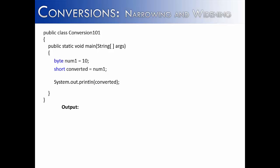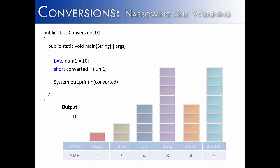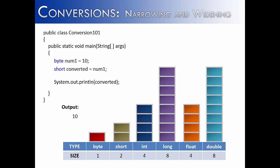And you can see that I have the number 10, and I'm going to take the byte number 10 and store it as a short 10. This is completely legal, and I would output 10. This type of conversion is called a widening conversion because I'm going from a byte data type,